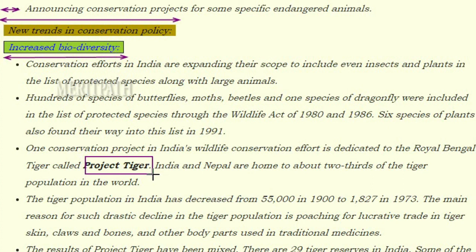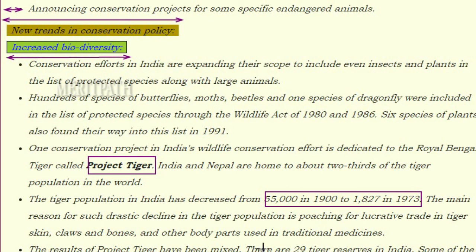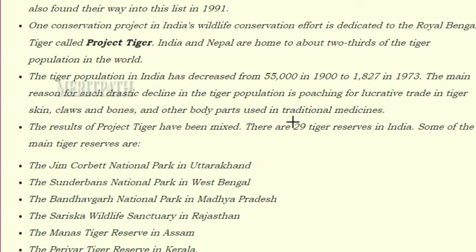One major conservation project in India is Project Tiger, dedicated to the Royal Bengal Tiger. India and Nepal are home to about two-thirds of the world's tiger population. The tiger population in India decreased from 55,000 in 1900 to just 1,827 in 1973. The main reason for this drastic decline is poaching for the lucrative trade in tiger skin, bones, and other body parts used in traditional medicines. There are 29 tiger reserves in India.